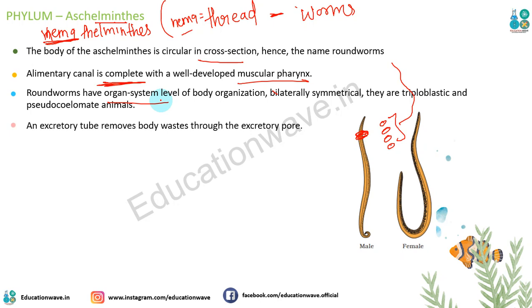They are bilateral symmetrical, triploblastic, and pseudocoelomate animals. Excretory tube removes body waste through the excretory pore - inke body mein ek excretory pore hota hai jahan se sara excreta nikal jata hai.